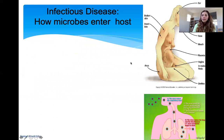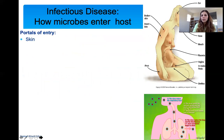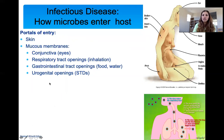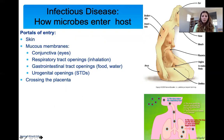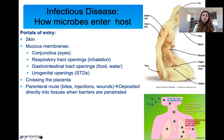One of the first things for a microbe to be a pathogen is it has to enter the host — if it doesn't enter the host, it can't make you sick. There are different portals of entry: through your skin, mucous membranes — eyes, respiratory tract openings, gastrointestinal tract openings, urogenital openings. They can cross the placenta and affect the fetus. They can enter through bites, injections, or wounds, which we call parenteral routes.